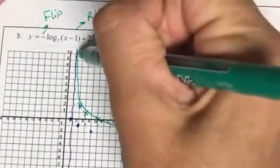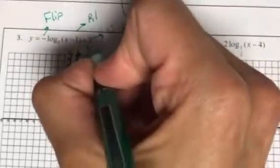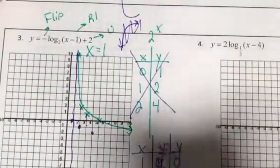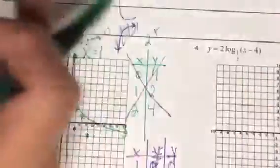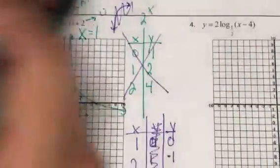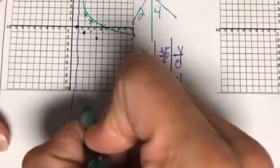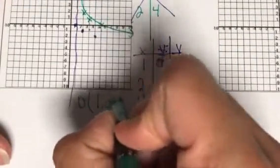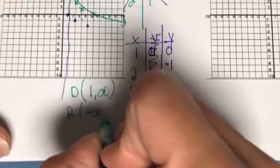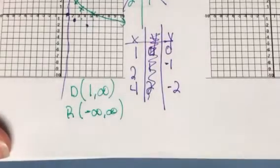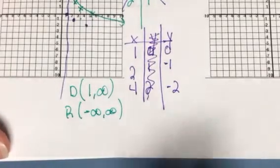For domain and range of logs: the wall is vertical (x = 1), which affects domain. Domain goes from 1 to infinity. Range has no wall affecting it: negative infinity to infinity.